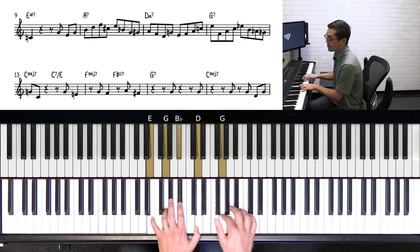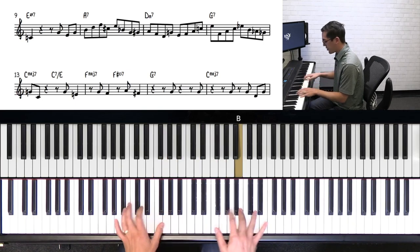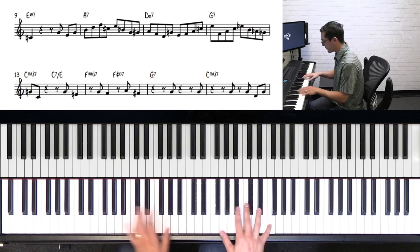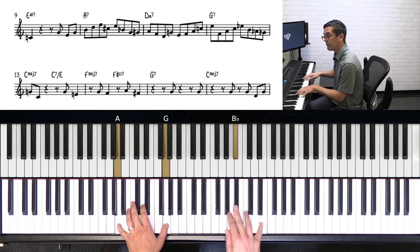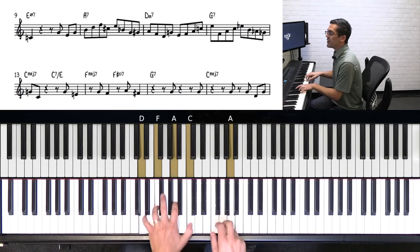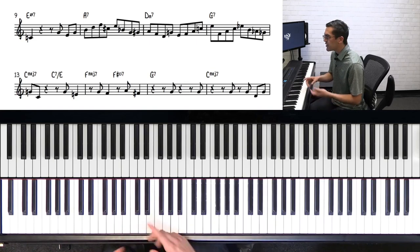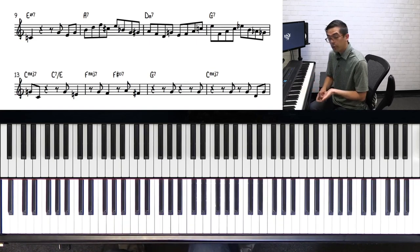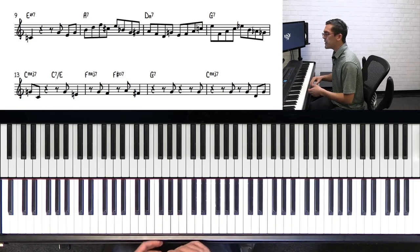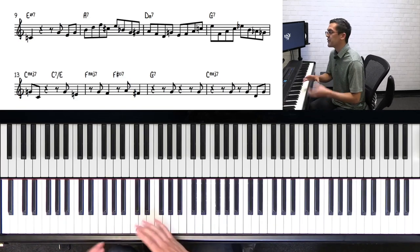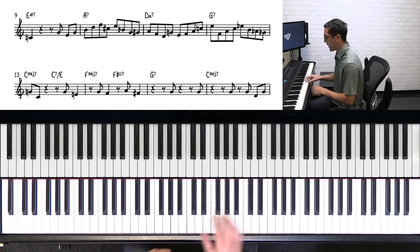On that E half diminished, he starts with 3, 1, 3, G, E, G. Then on the A7, he continues that arpeggio. So what he's doing here is he's throwing in some altered notes to make that sound more like A7. That C sharp is super important because that's the third of the chord. And then he's throwing in the F natural, which is a sharp 5, and the B flat, which is the flat 9, because those types of alterations lead really well into minor chords, which is what he's doing here. The next chord is D minor.